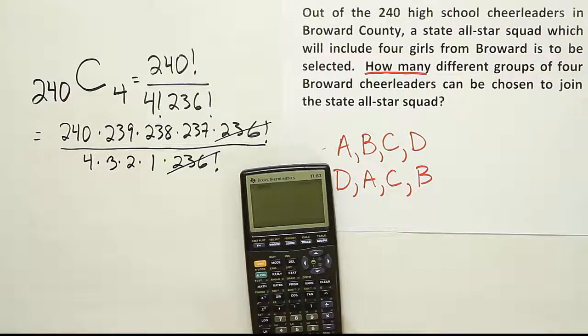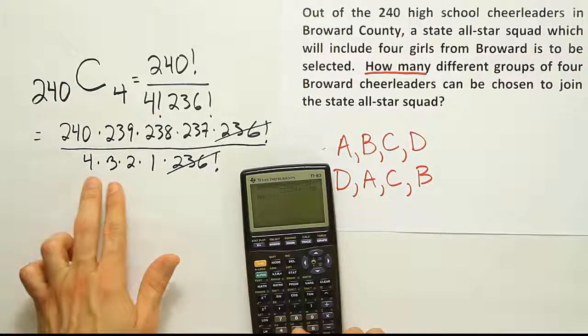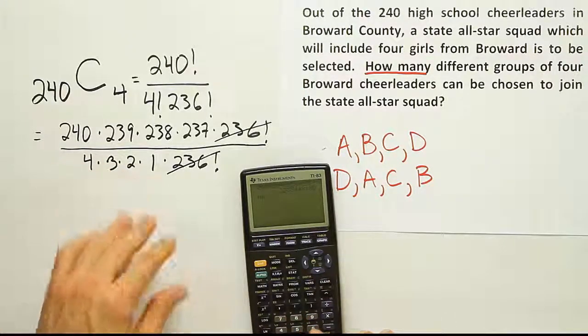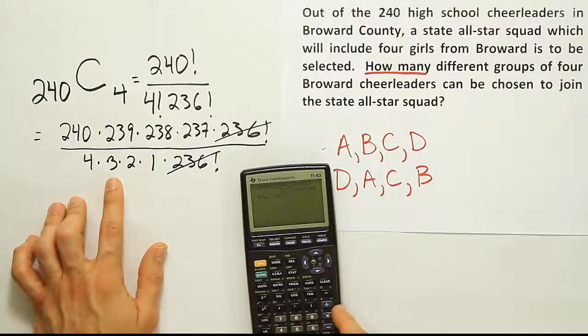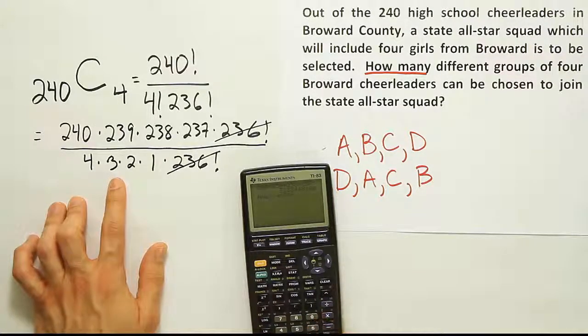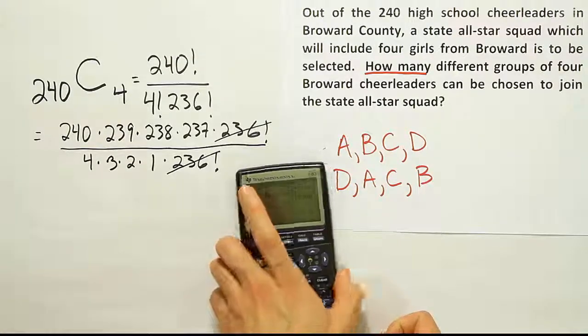So let's do 240 times 239 times 238 times 237. And we get this huge number in my calculator. I'm not even going to bother to write it down. I'm just going to hit divide by 4 times 3 times 2 times 1. Of course we can do that in our heads, it's 12 times 2 is 24, or we can just multiply it all out. I'm going to put it in the calculator in parentheses so you would see how to do it. It would be 4 times 3 times 2 times 1. Close it up.